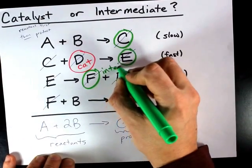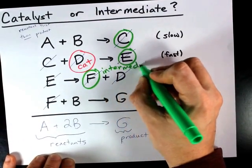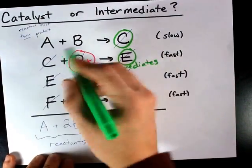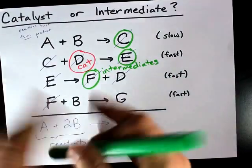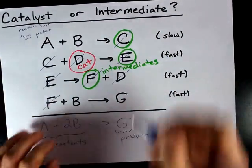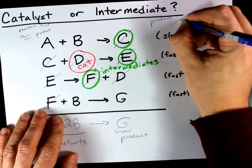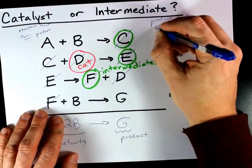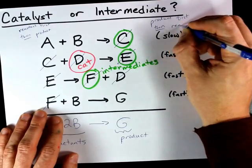Those are intermediates in that they are the products of one of the reactions, but then that thing goes on to become a reactant and is used up that way. An intermediate is a product first in the mechanism, and then it appears as a reactant.